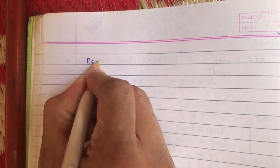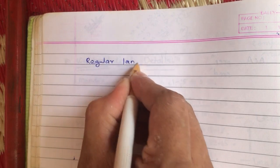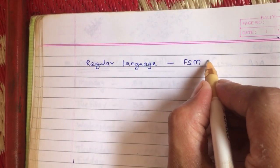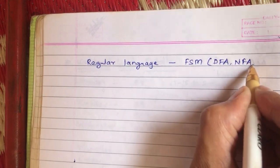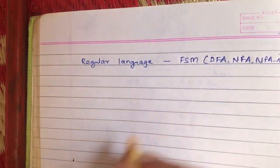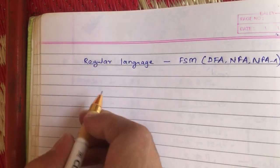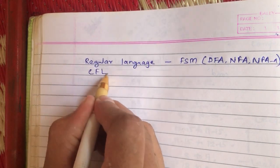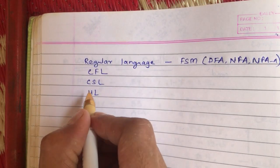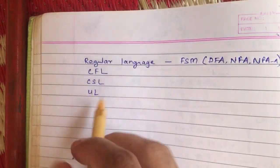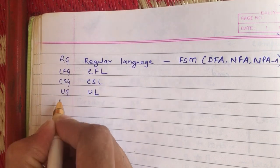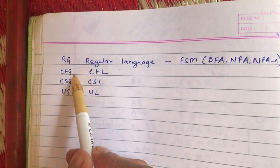Up till now in the first part of this course we have discussed regular languages and how they can be identified with various finite state machines — DFA, NFA, and NFA with epsilon transitions — and various problems based on these. We have also discussed that there are four types of languages: regular language, context-free language, context-sensitive language, and unrestricted language, each with corresponding grammars: regular grammar, context-free grammar, context-sensitive grammar, and unrestricted grammar.